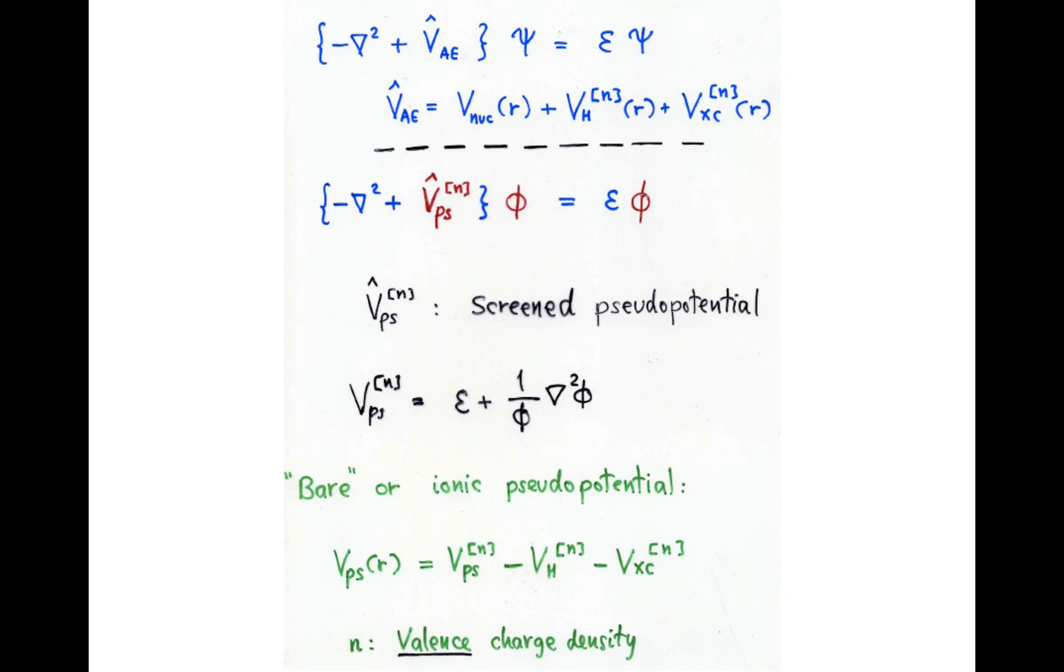Now, to conclude the procedure, we need to find the pseudopotential itself. And the way is to compare this equation, which gives the actual wave function, the all-electron wave function, using the all-electron potential, compared to this other equation, which we have here the pseudo wave function, and here we have the screened pseudopotential. If we invert this equation, we get the screened pseudopotential like this, and all that's left to be done is to unscreen the pseudopotential, by taking out the Hartree screening and the exchange and correlation screening in this case also. Here, n is the valence charge density.